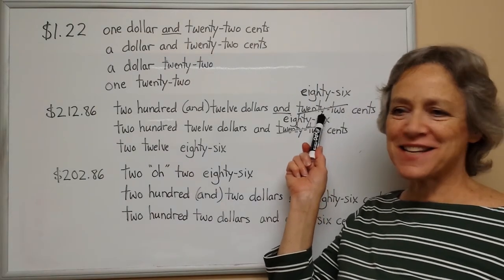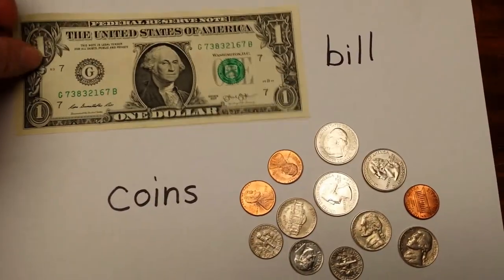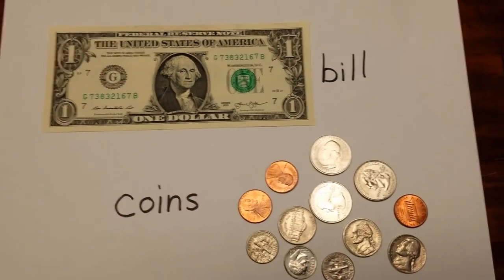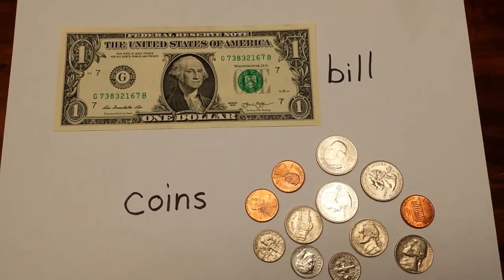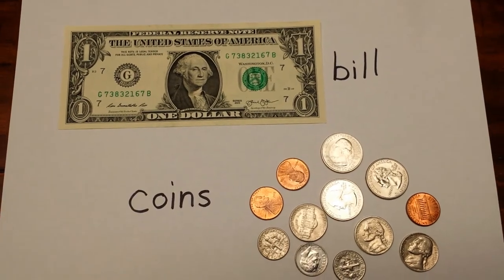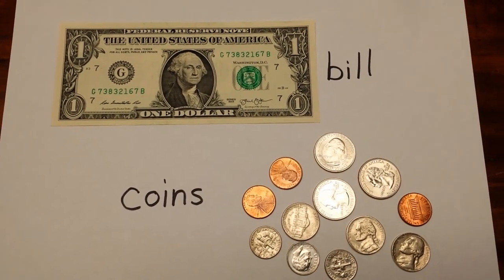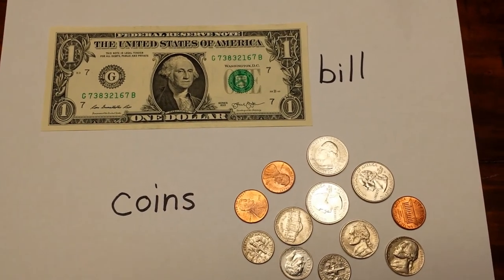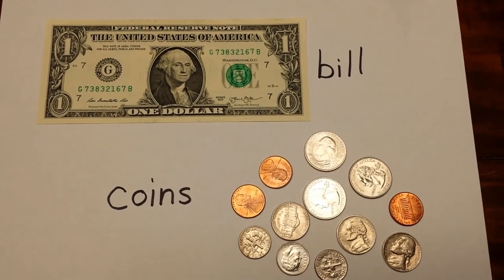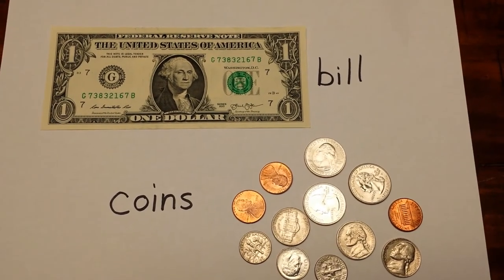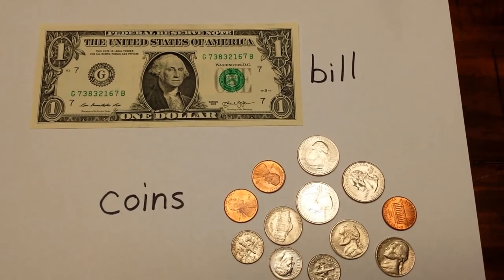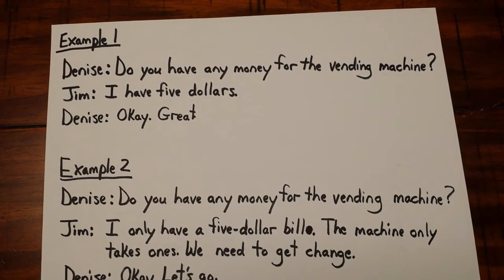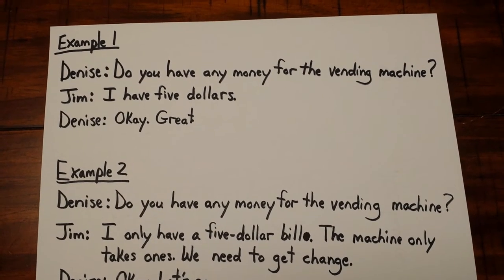This piece of paper is called a bill. These are called coins. We usually only use the words 'bill' and 'coin' if we're talking about the physical object. If we're talking about the amount of money, we don't use those words — we would just talk about the amount. For example: I have one dollar. Or, I have fifty cents. Or, it costs thirty-seven dollars and twenty-two cents. We do not use the words 'bill' and 'coins' unless we're talking about the actual object. Here are some examples of using and not using the words bill and coin.